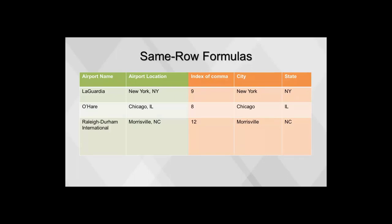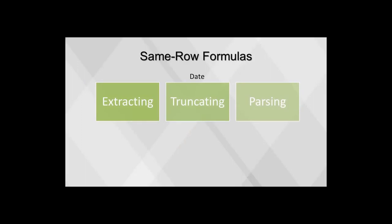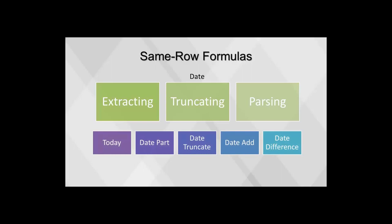We can also use formulas for extracting, truncating, and parsing date parts from a date field. A date or datetime field carries more information than a typical variable: the time of day, day of week, day of month, month of year, year number, and the difference in date from other dates such as today. The most heavily used date functions are: today, used to get today's date; date part, used to get a part of a date (e.g., the month returns its numeric value); date truncate, which returns a date value at the beginning of a specified period; date add, which adds or subtracts a certain number of periods to a date; and date difference, used to calculate the number of periods between two dates. For example, using a holidays table, we can add a column with the numeric day of the week, or subtract today's date from the date column to find the number of days remaining until each holiday.